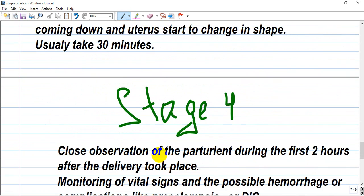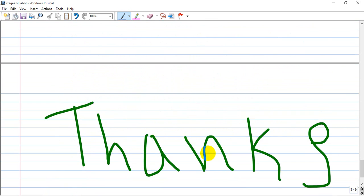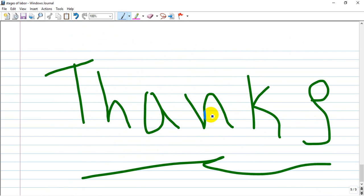Stage 4 is close observation of the parturient during the first 2 hours after delivery. Monitoring includes vital signs and preventing possible hemorrhage or complications like preeclampsia or DIC. Thank you for watching. You can subscribe and follow me.